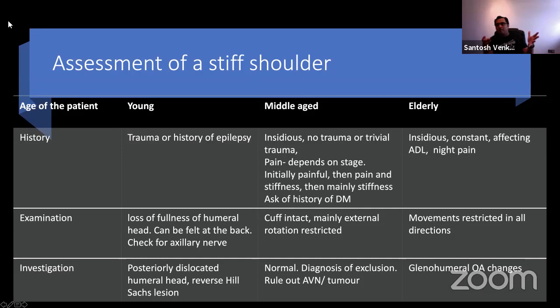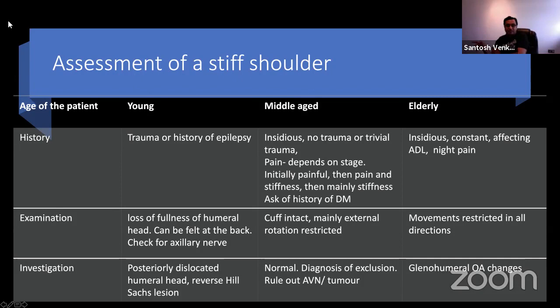After history-taking you move on to examination. For a locked posterior dislocation, the contour change compared to an anterior dislocation may not be optimal, so you could be caught out under exam stress. Generally you should be able to demonstrate that they can't externally rotate their arm. In a locked posterior dislocation with thin body habitus, you can sometimes feel the dislocated posterior head. Always look for axillary nerve status. In a middle-aged patient, depending on the stage of frozen shoulder, examine whether the cuff is intact and note that the classically restricted movement is external rotation.